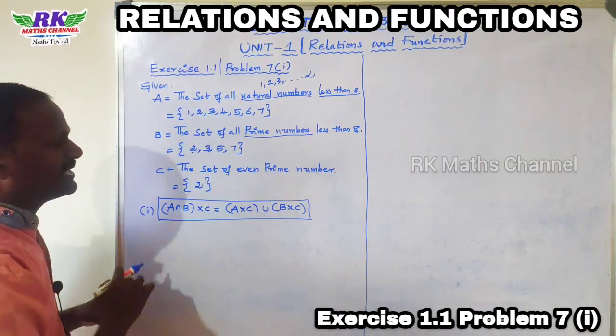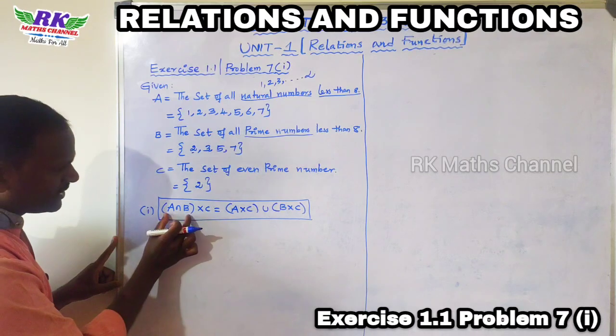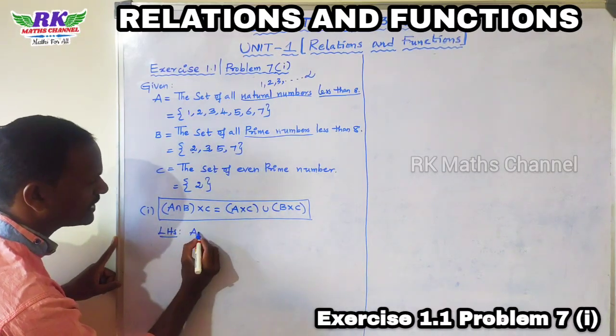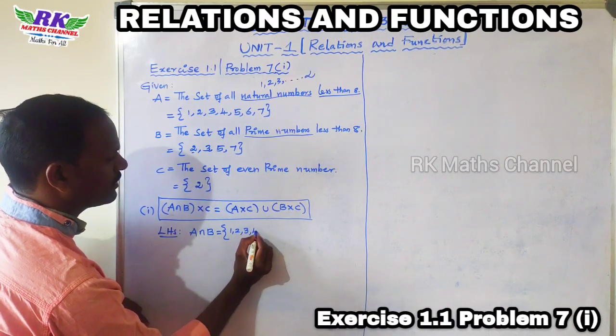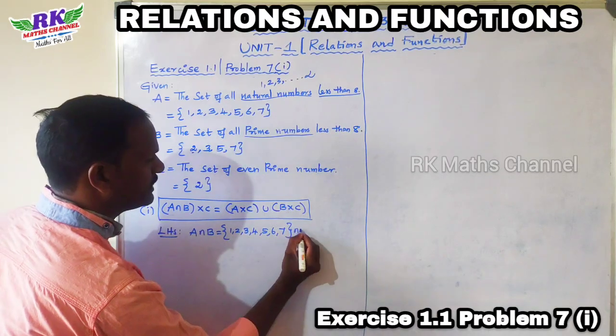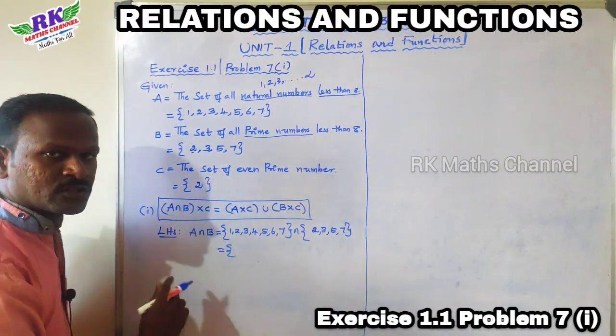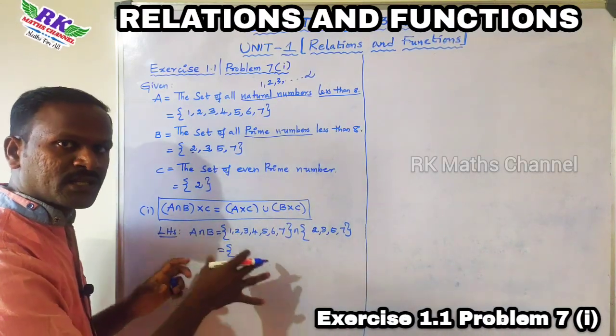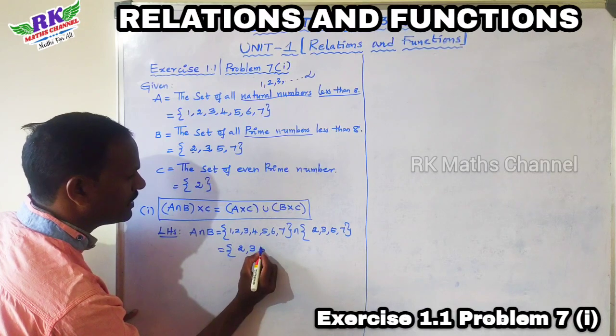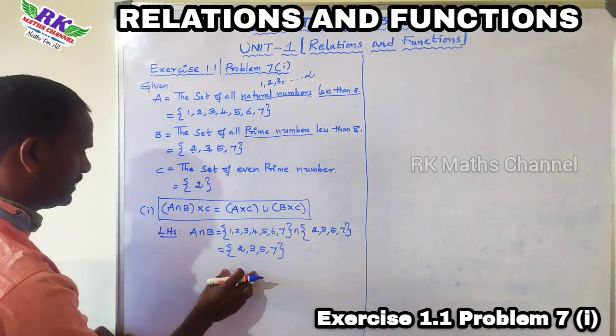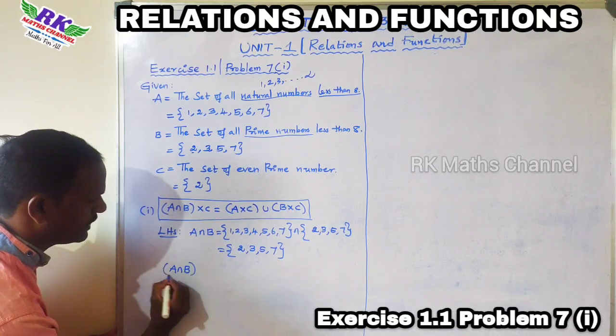This is A, B, C sets. First, LHS. A intersection B. So A is 1, 2, 3, 4, 5, 6, 7 intersection B set 2, 3, 5, 7. The intersection gives us the common elements: 2, 3, 5, 7.